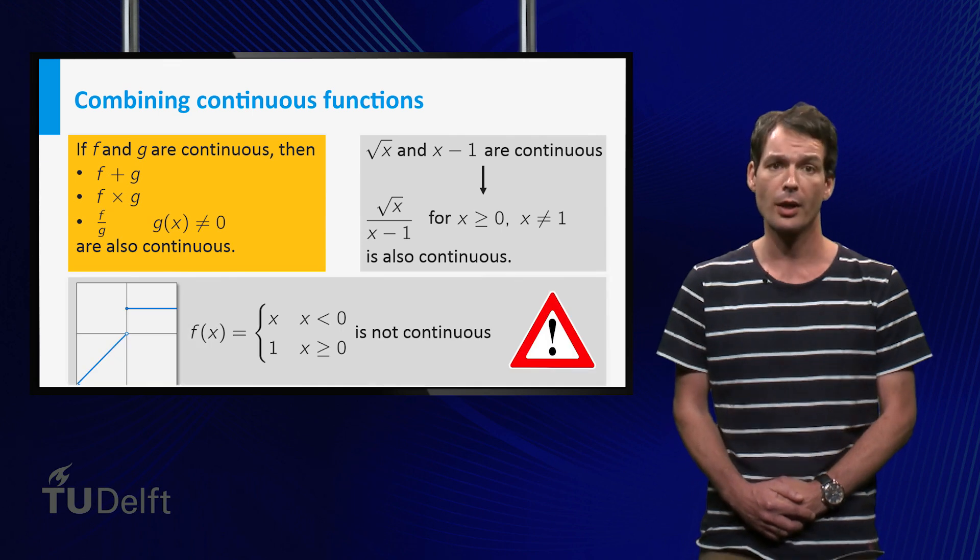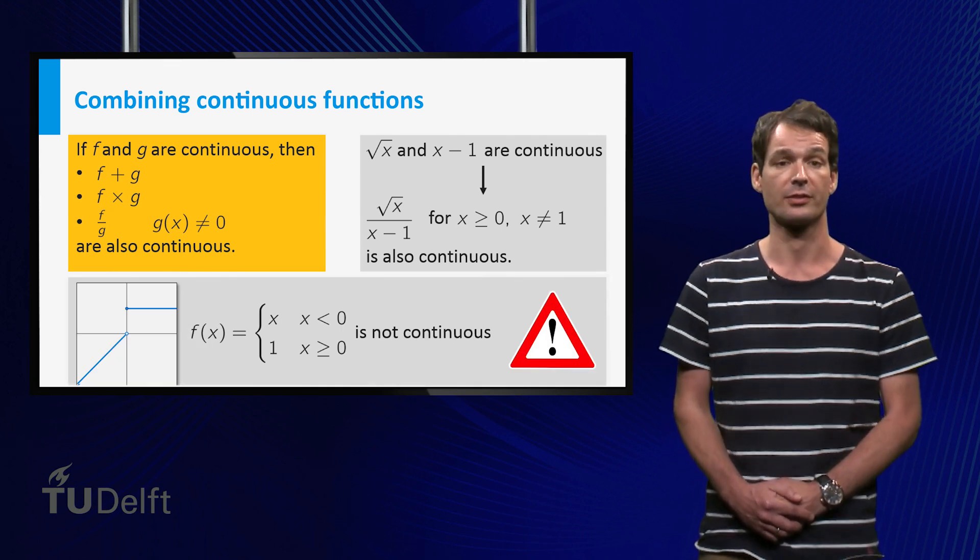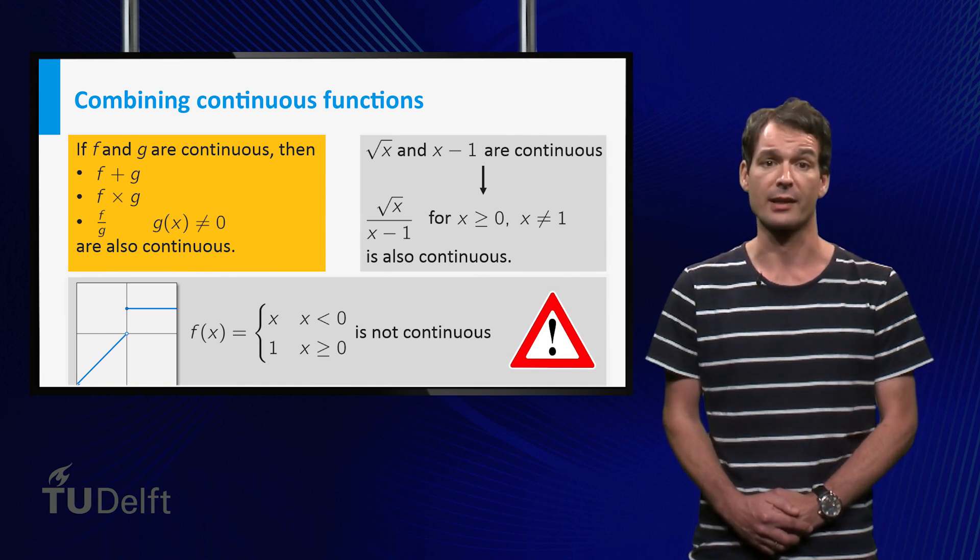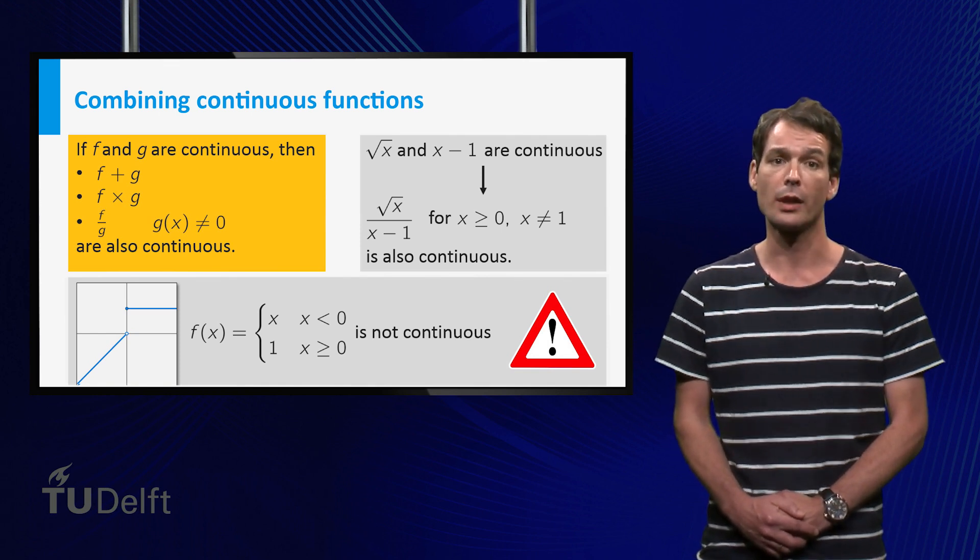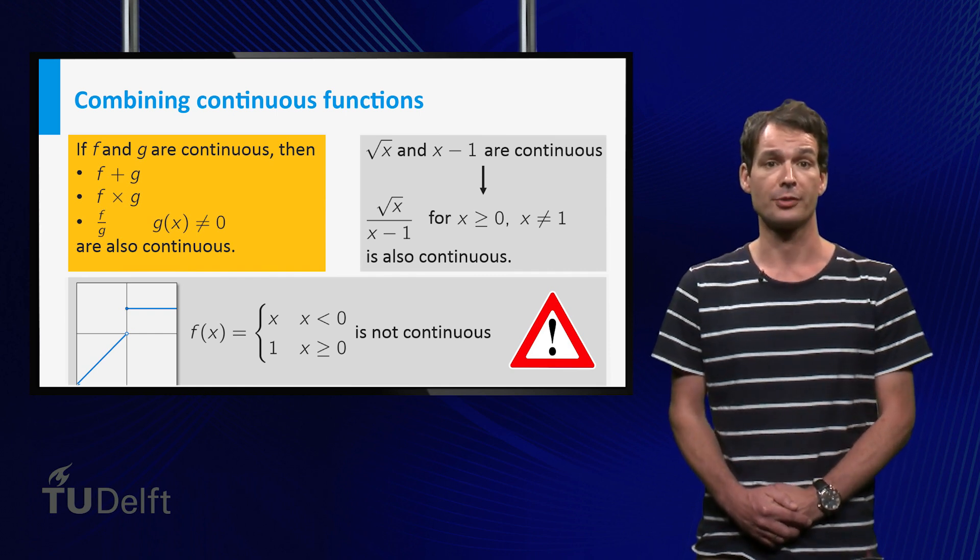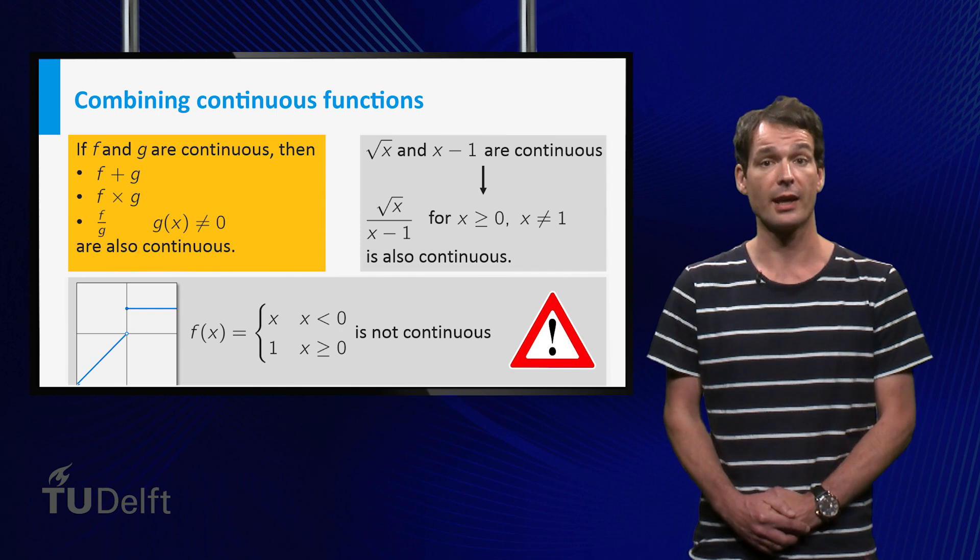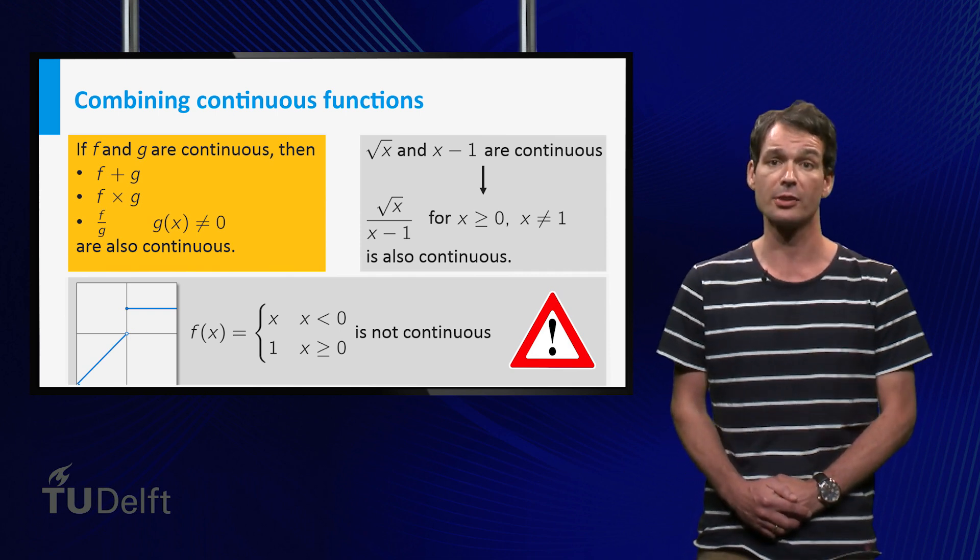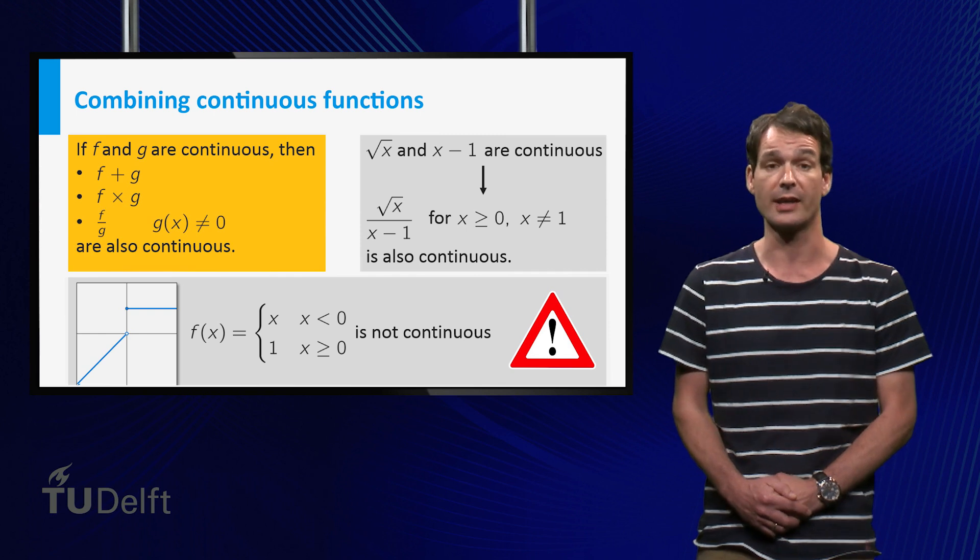Be careful though with piecewise defined functions. For example, the function which is equal to x for x less than 0 and equal to 1 for x greater than or equal to 0 is made of continuous functions, namely the functions x and the constant function 1. But f itself is not continuous because there is a jump at x equals 0.